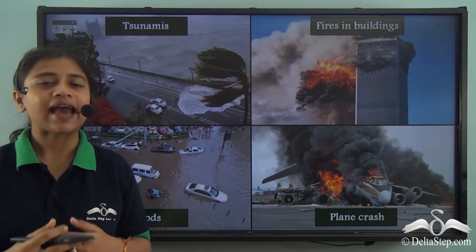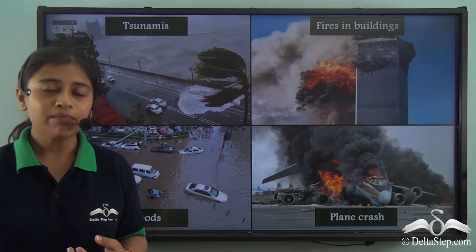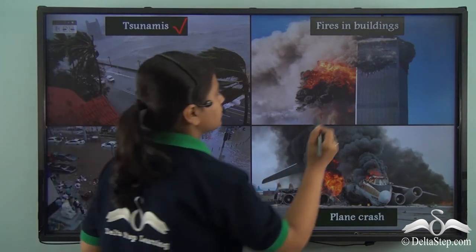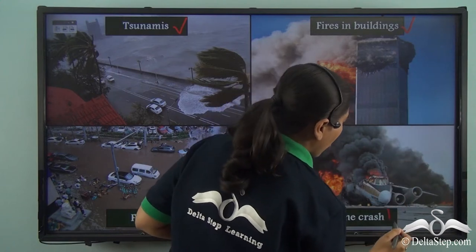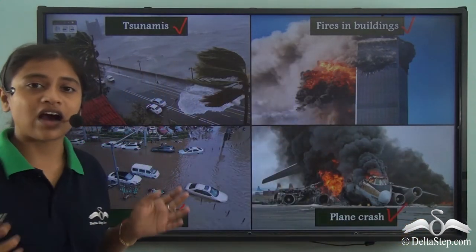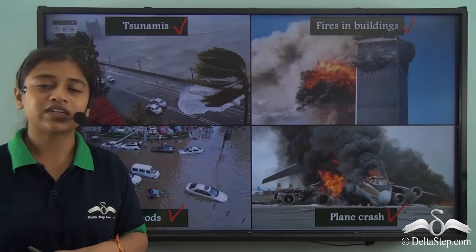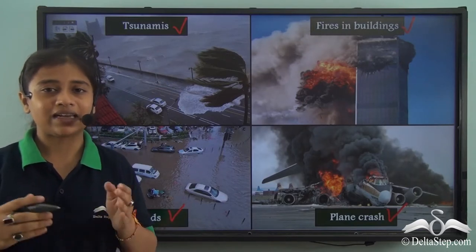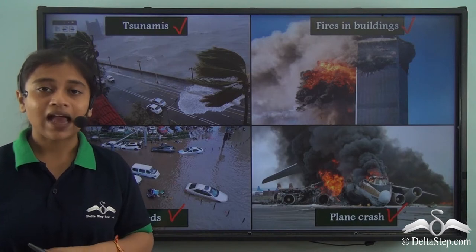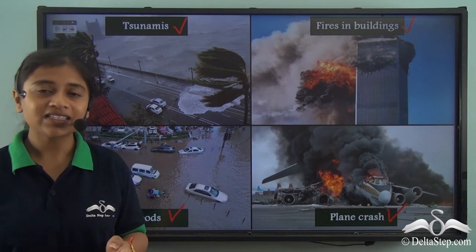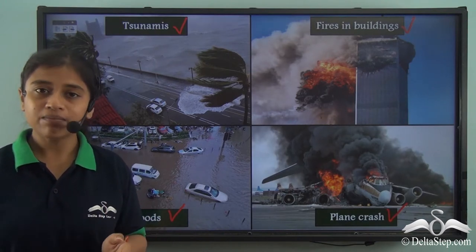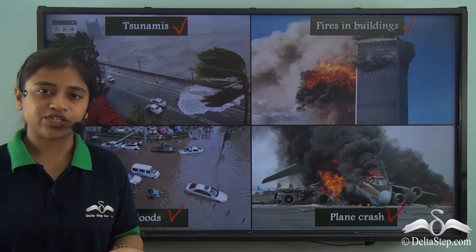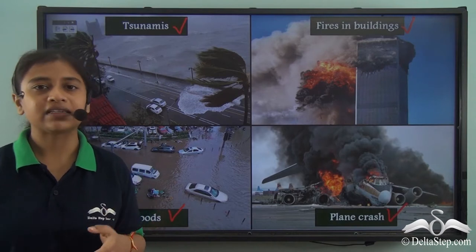Disaster could take place in any form. It could come as a tsunami, a flood, fires in buildings or a disastrous plane crash. There are some disasters caused by climatic or geological factors and can be categorized as natural disasters, while there are some disasters that take place due to human activities and can be categorized as man-made disasters.